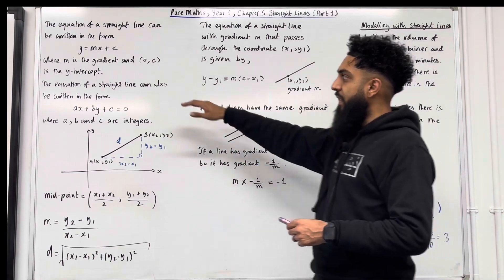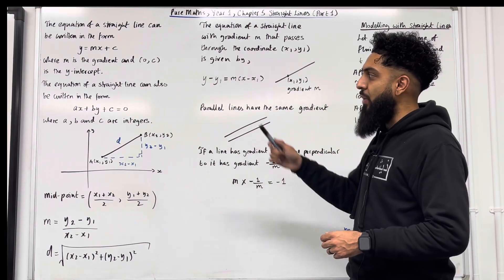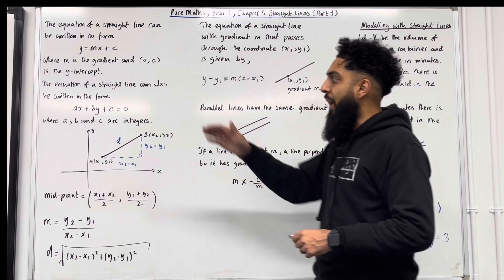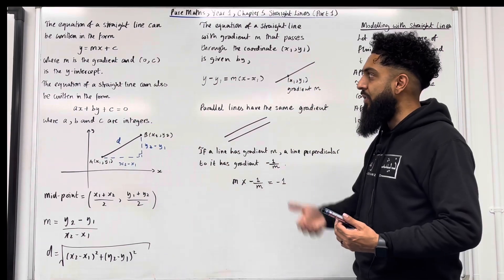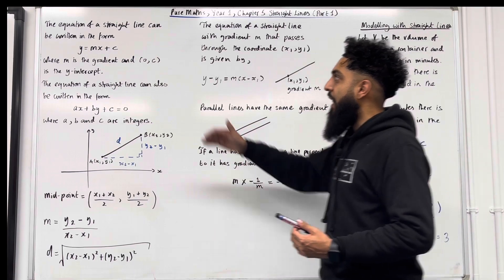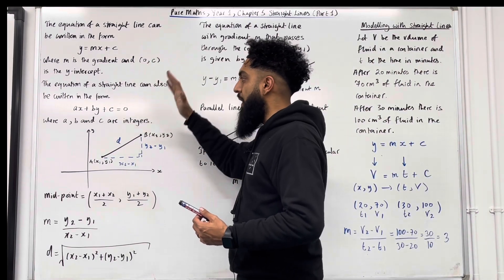The equation of a straight line can also be written in the form ax plus by plus c equals 0, where a, b and c are integers. In the examination you could be asked to write down the equation of a straight line in this form or this form over here.